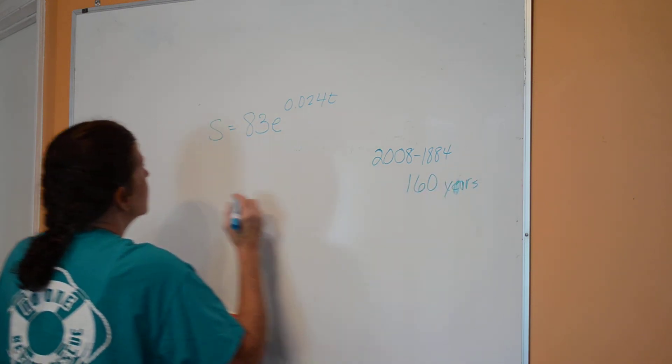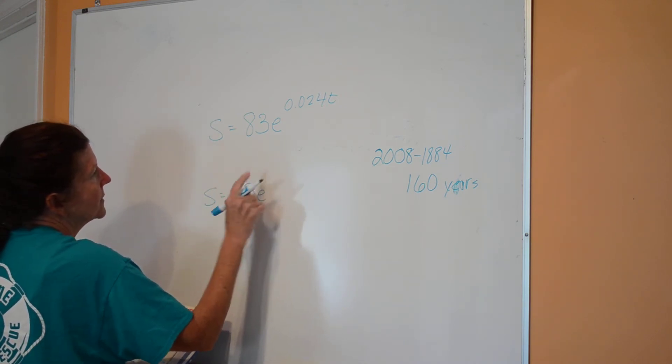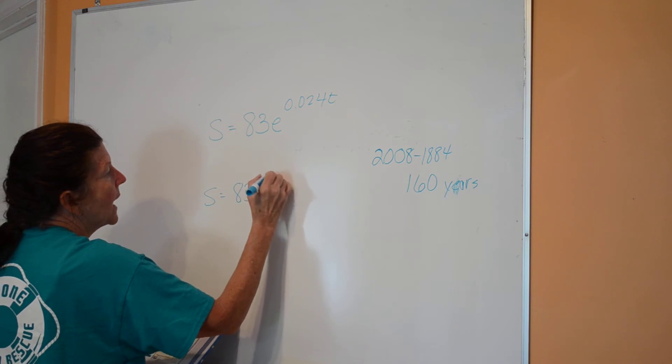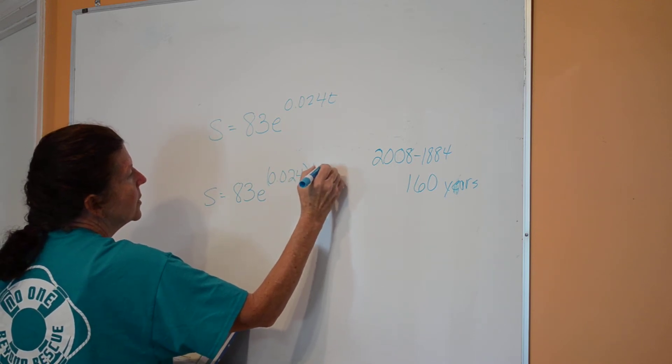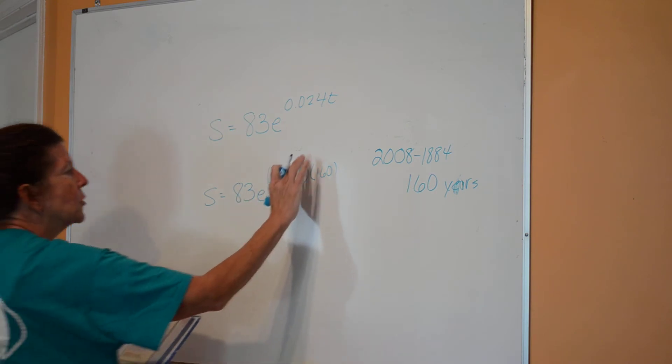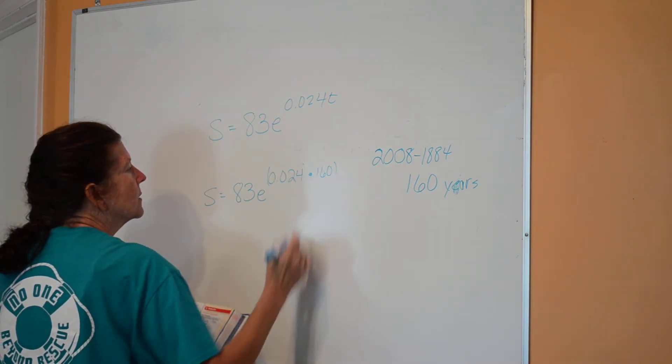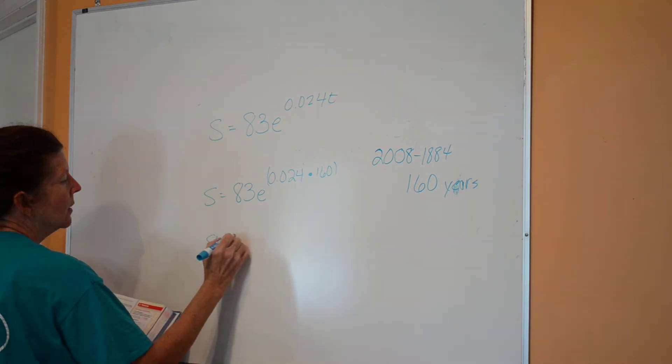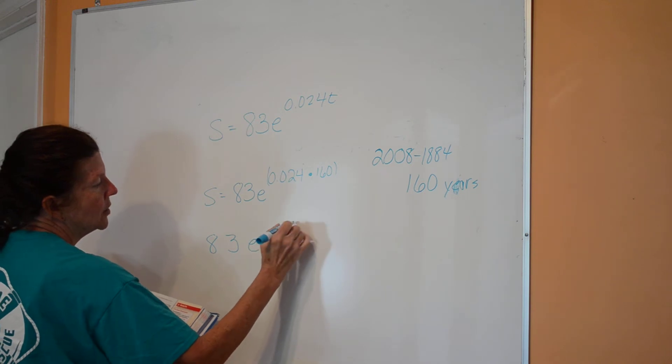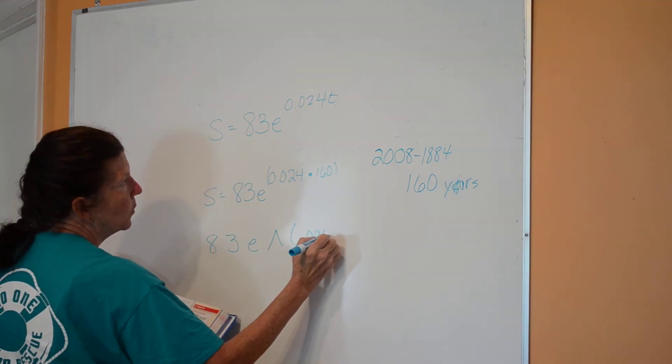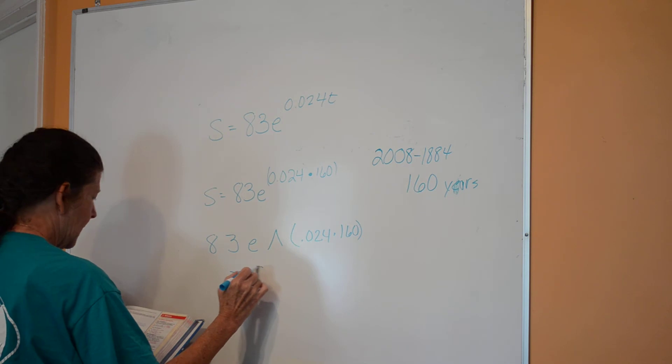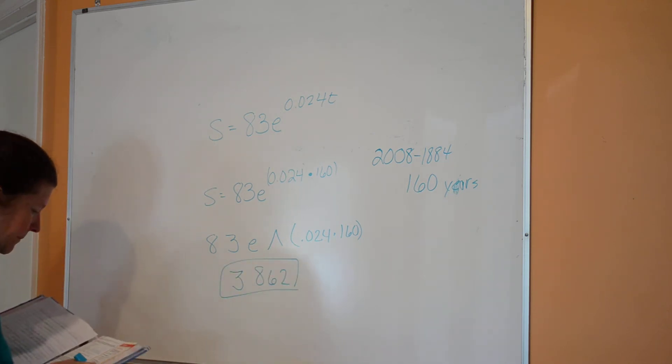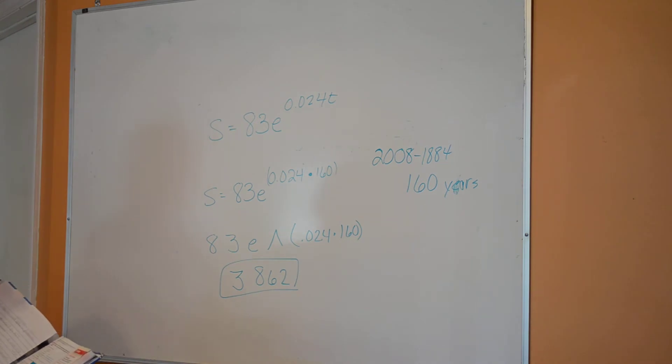Now, the truth of the matter is I'm just going to plug in here. I'm not even going to use the anti-log because I have an e button on my calculator. So I'm going to actually put that into my calculator and I'm going to raise it to the 0.024 times 160 power. So truthfully, just put a multiplication between that. You're going to go 83, then the e button on your calculator, raise to, parentheses 0.024 times 160. You should get a value there of 3,862 postage stamps.